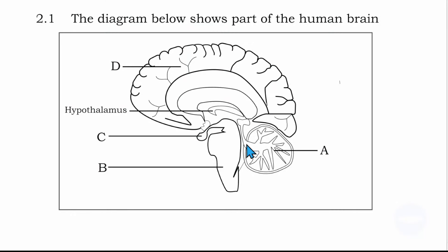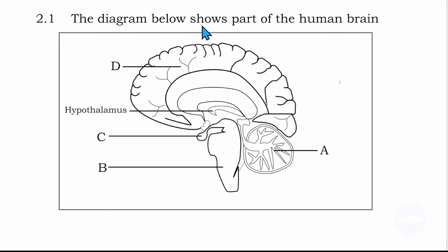Here I have the diagram for the questions. Before I answer the questions, let me give the labels. Question 2.1 says the diagram below shows part of the human brain. So this is the human brain — let me give the labels.